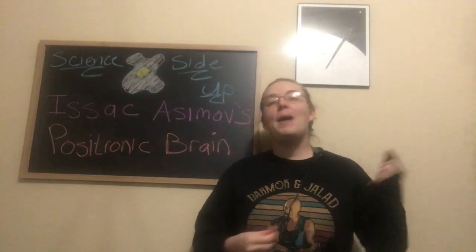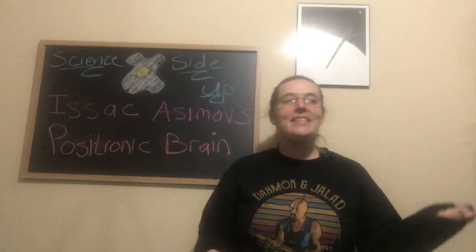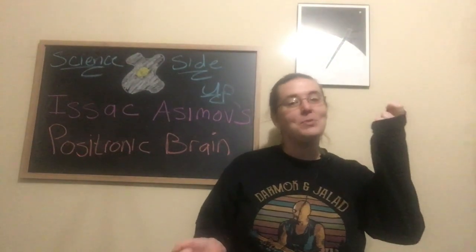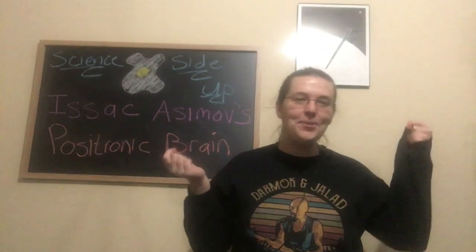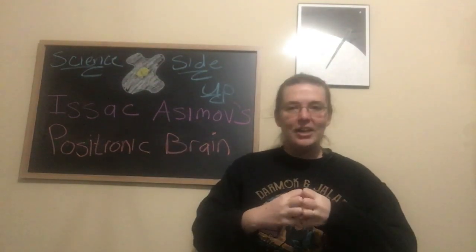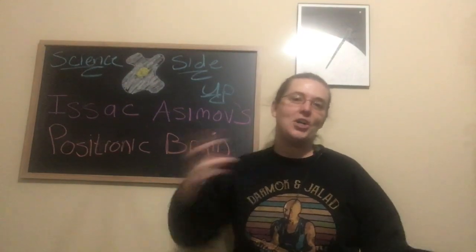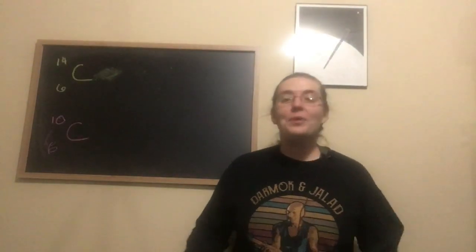What is a positron, you ask? Excellent question. A positron is the antimatter particle of an electron. So what that means is it has every single property of an electron—they're the same in every way except they have opposite charge.